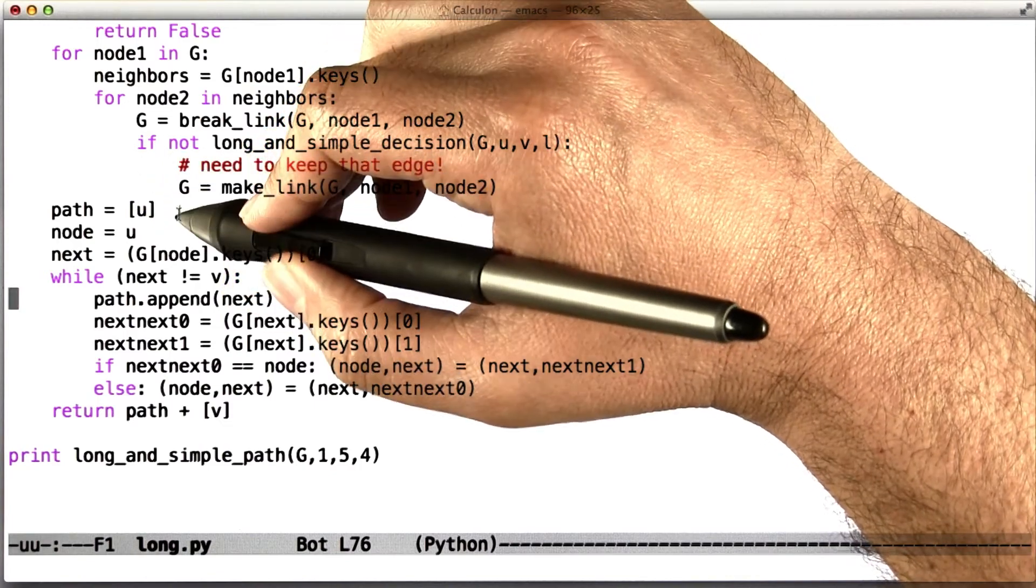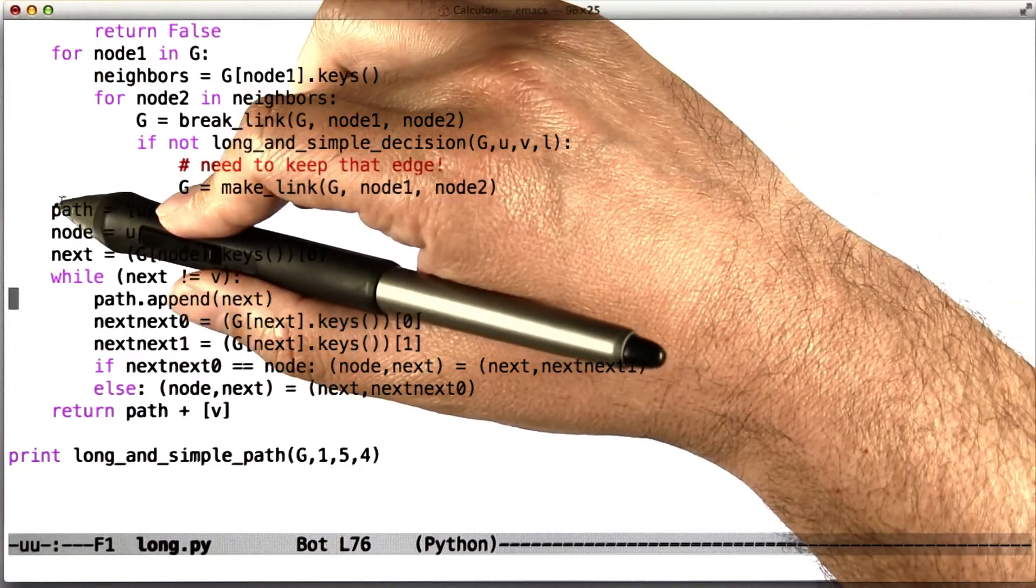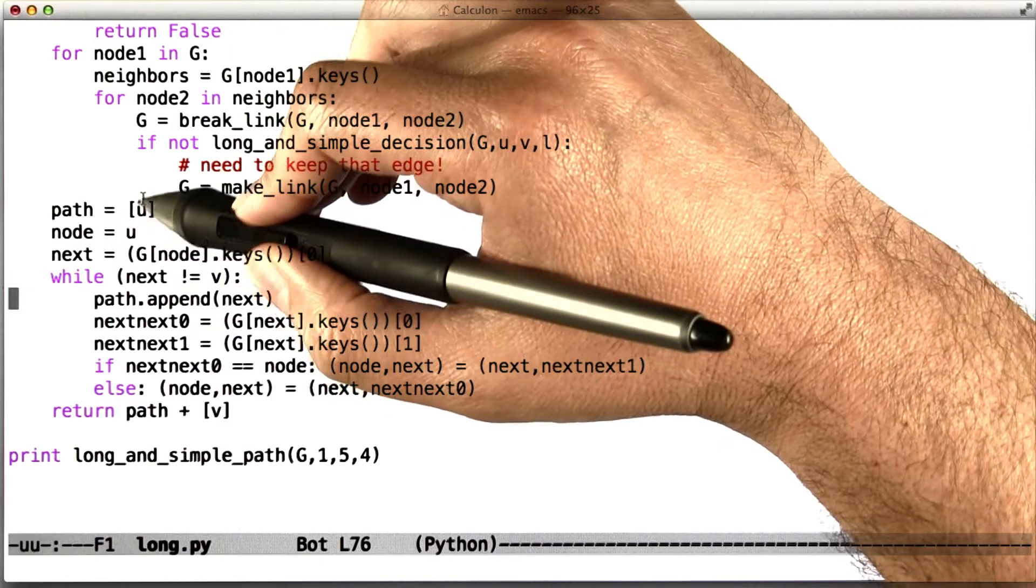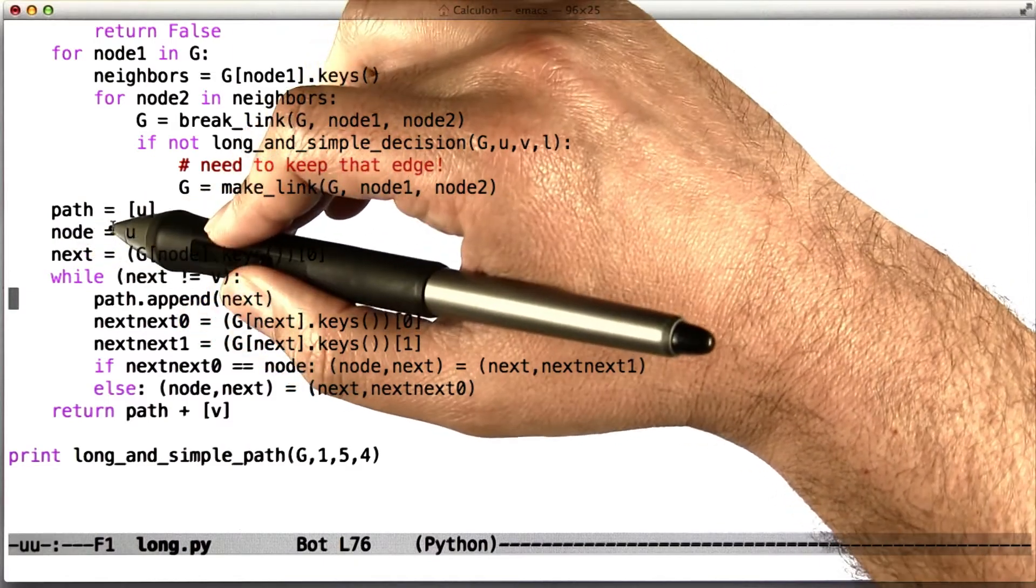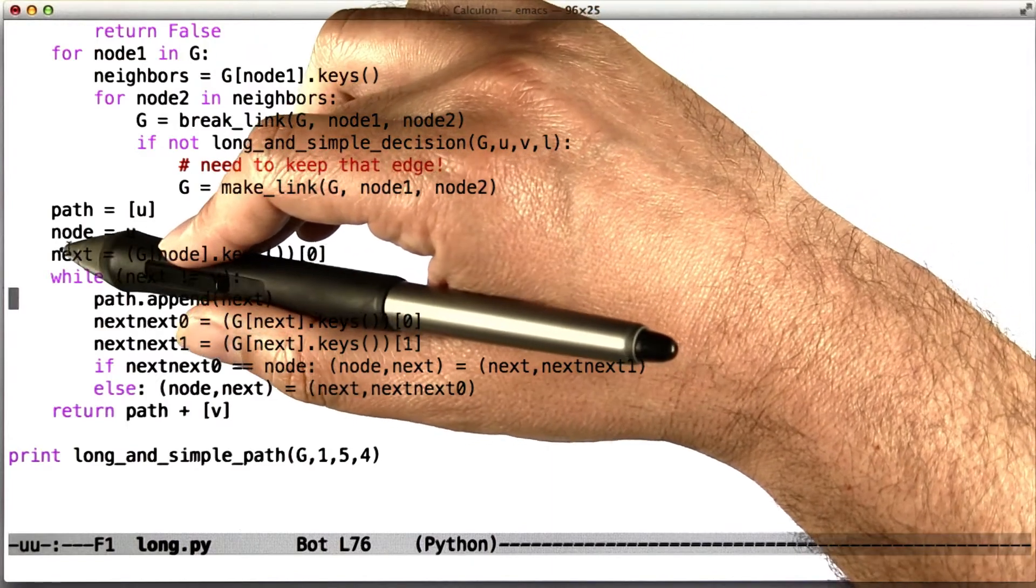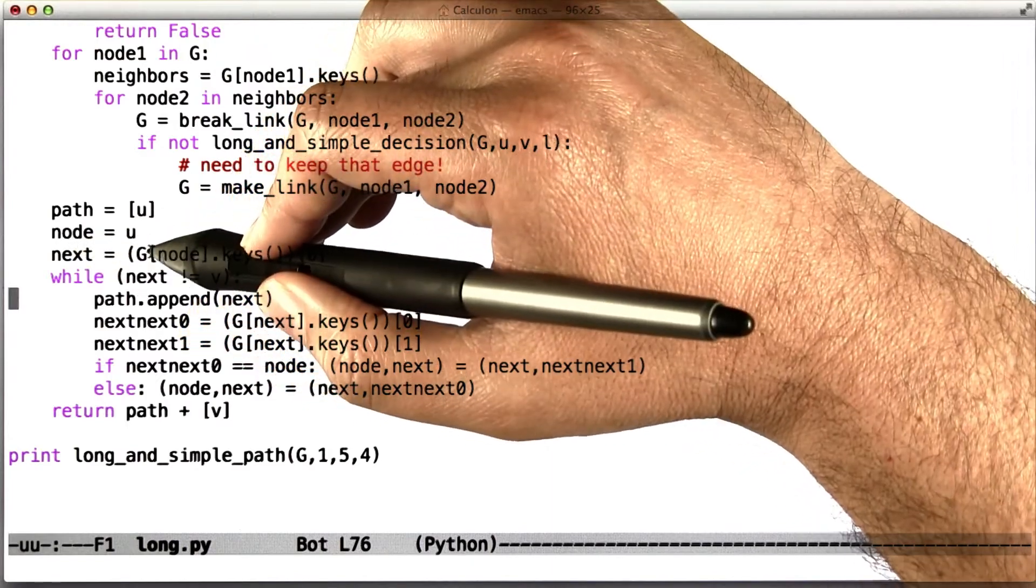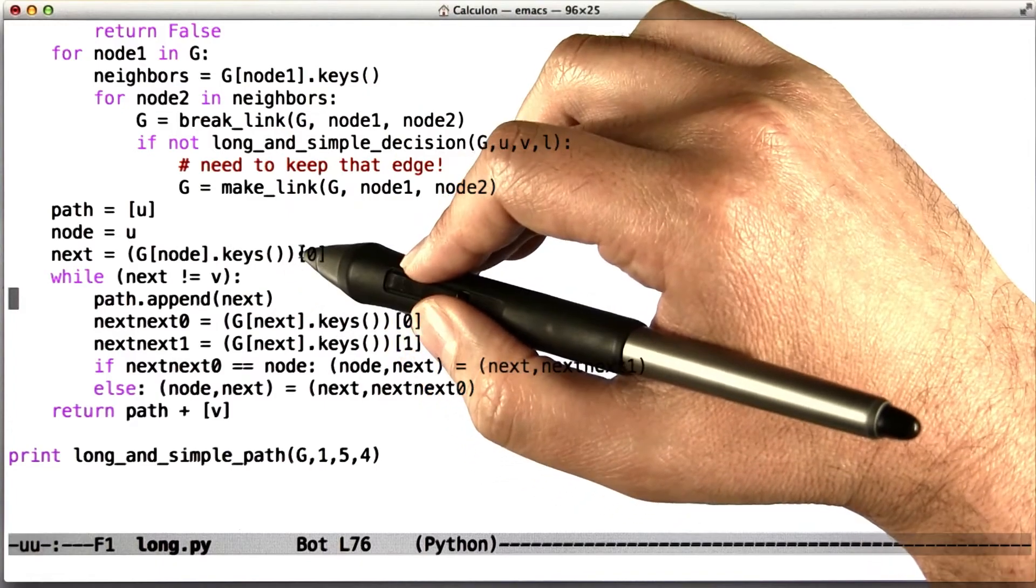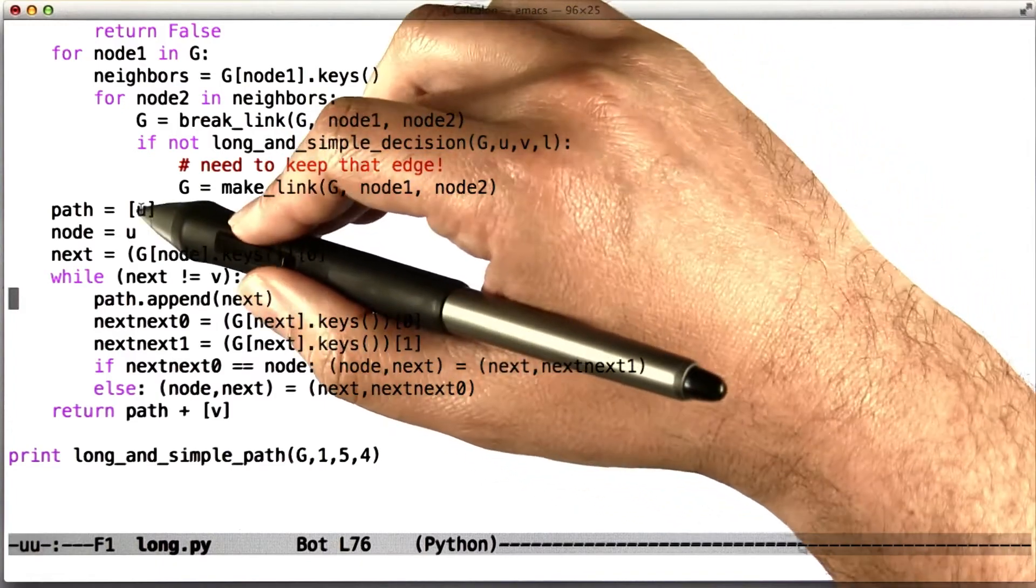But another way to do it that's more specific to this case is we start off building our path from U. We're going to have a variable node, which is a particular point in the chain, and a variable next, which is the next point in that chain, and we start that off with whatever is the neighbor of U.